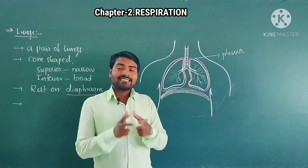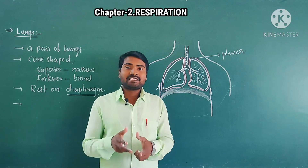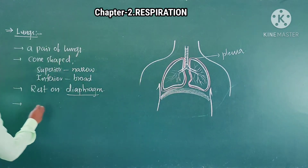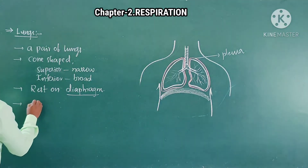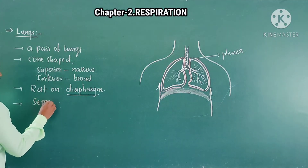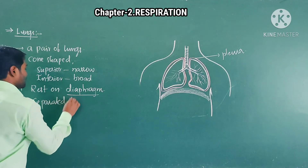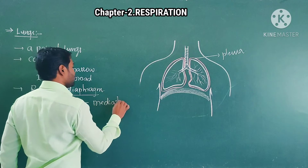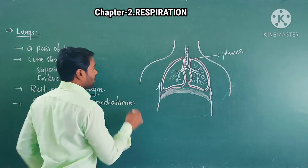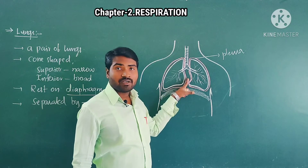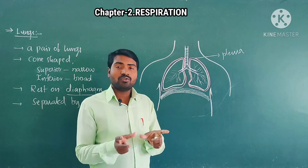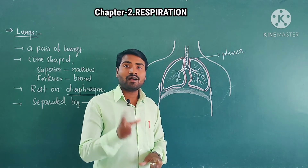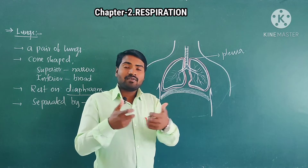These both lungs are separated by a space that is called Mediastinum. It is a space which provides room for the heart.